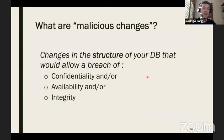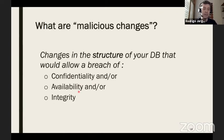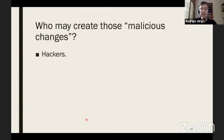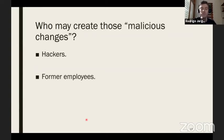The title of my session is detecting malicious changes in Oracle databases. Malicious changes are things that affect the three CVE columns: breaking confidentiality, availability, or integrity. Those malicious changes are most often placed by hackers who somehow breach your firewall perimeter and get inside your database, or by former employees with malicious intent who install a backdoor before leaving the company.